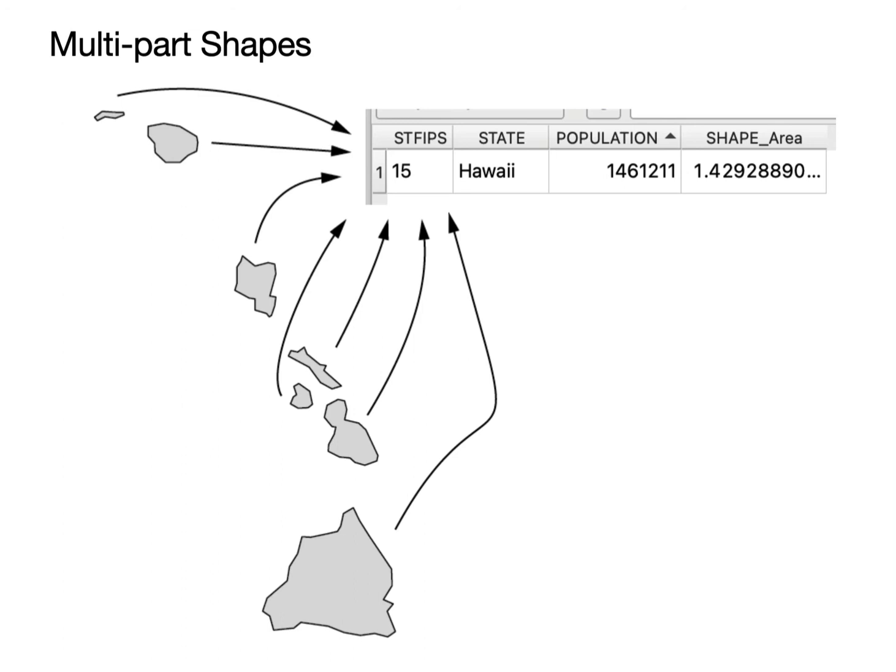We just have to realize that that's a multi-part shape. And when we do certain calculations, they might apply differently. So we have usually a one-to-one relationship, but in multi-part shapes, we don't have a one-to-one relationship. We have a many-to-one relationship between the geography features and the table.